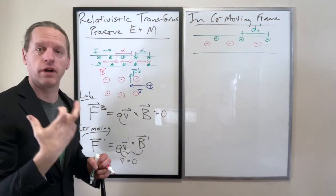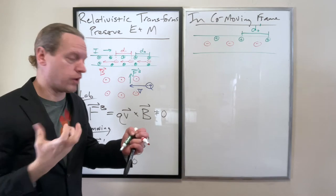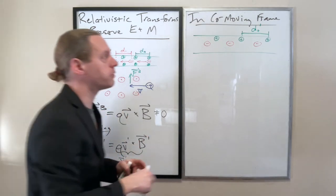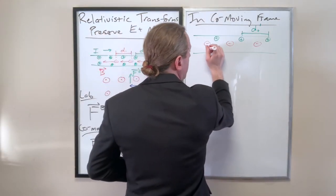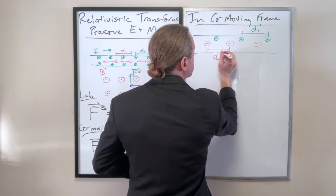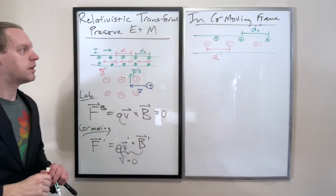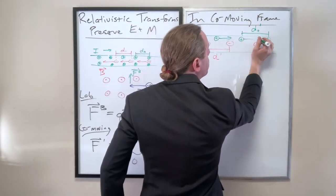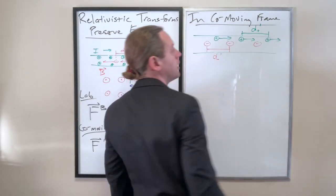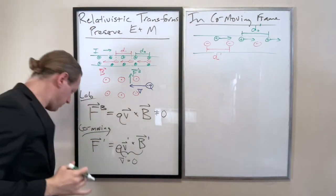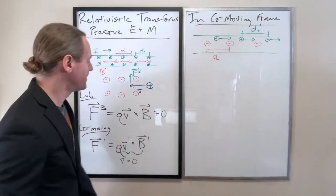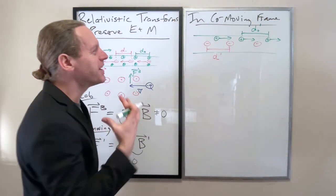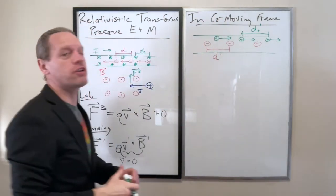So this will be d plus, and that will be d minus. And in this, in our lab frame, those have to exactly match, because if the protons were more closely spaced, or if the electrons were more closely spaced, there would be a non-zero charge. But that's not necessarily guaranteed to be the same in this frame here.